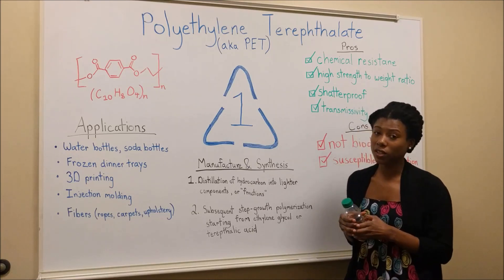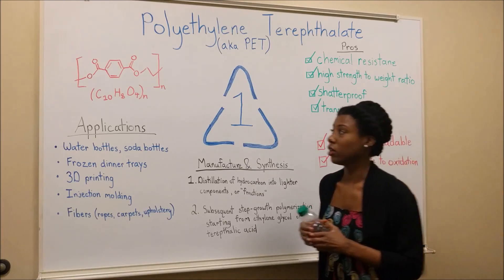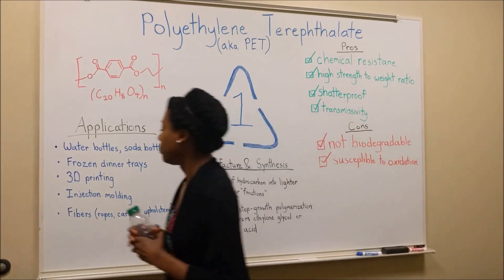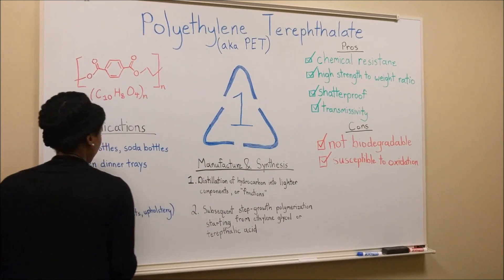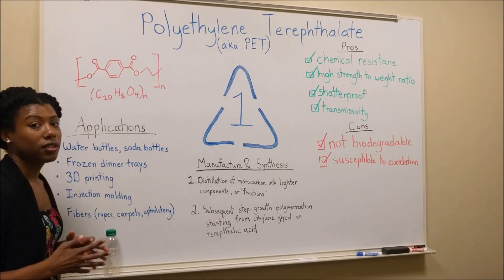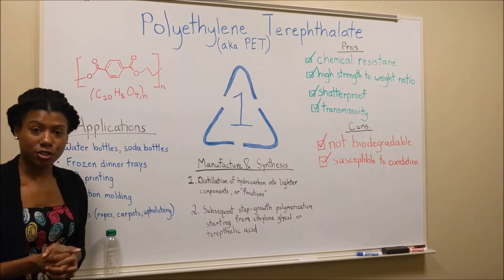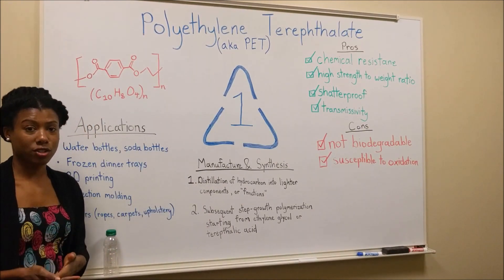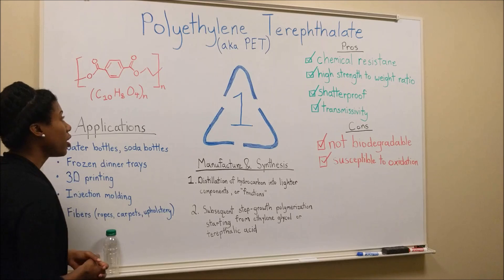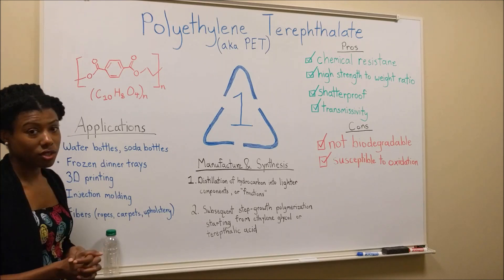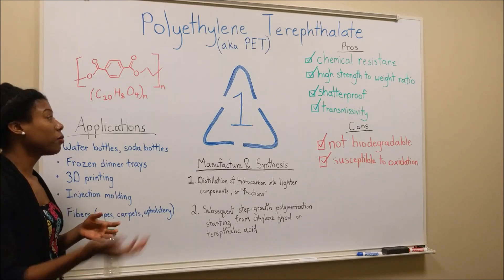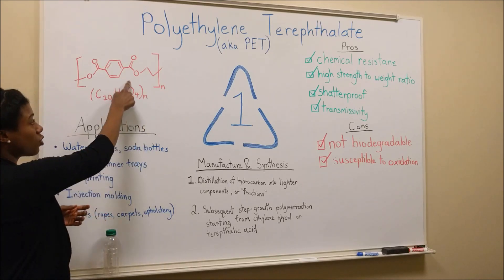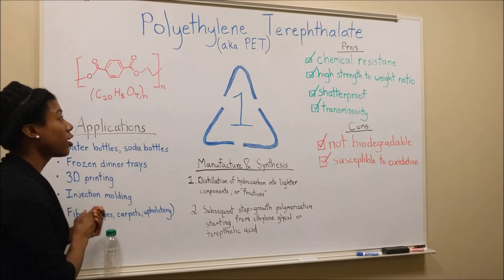Let's take a look at the structure. Polyethylene Terephthalate is an ester — a polyester. And how do I know this? Because we have this ester linkage right here.